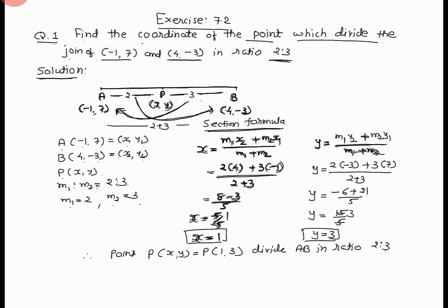Put the values: m1 is 2, y2 is -3, m2 is 3, y1 is 7 upon 2 plus 3. y equals -6 plus 21 upon 5. y equals 15 upon 5. 5 into 3. y equals 3.